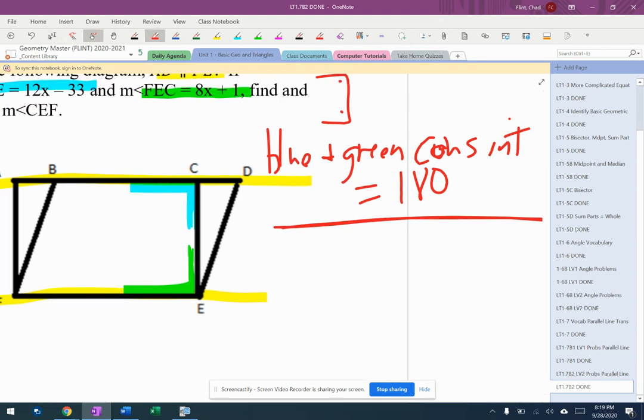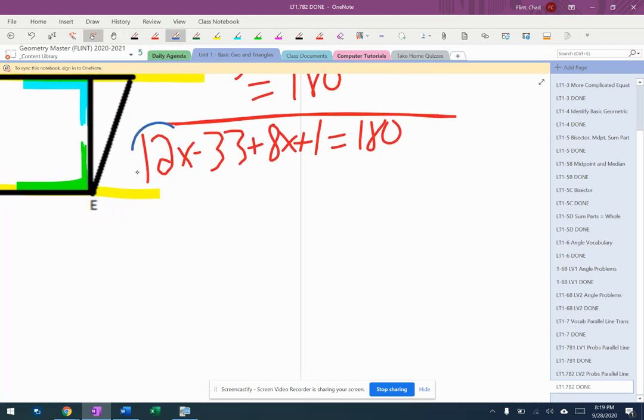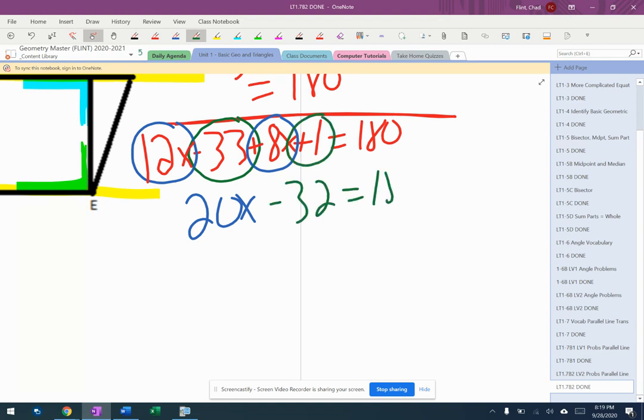So now I'm going to take 12X minus 33, and I'm going to add in 8X plus 1, and I'm going to get 180 degrees. So 12X and 8X is 20X, minus 33 and plus 1 is minus 32, equals 180. And then I'm going to continue the solving process here.